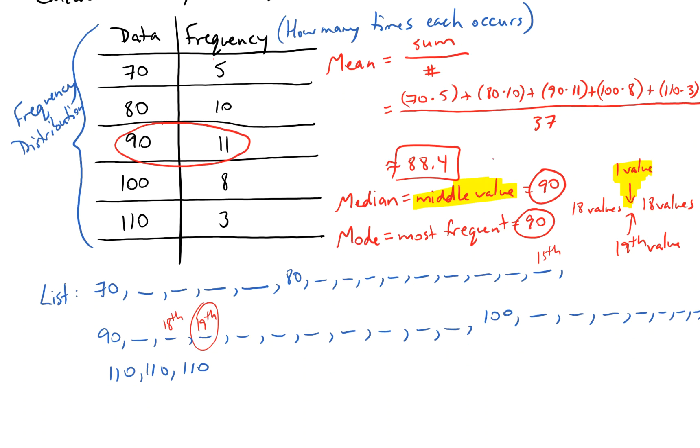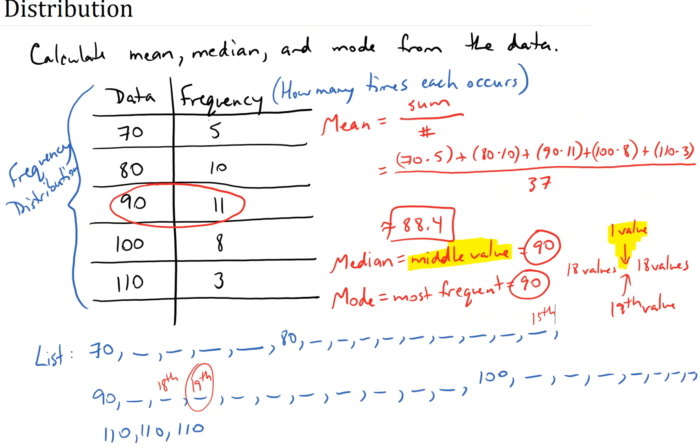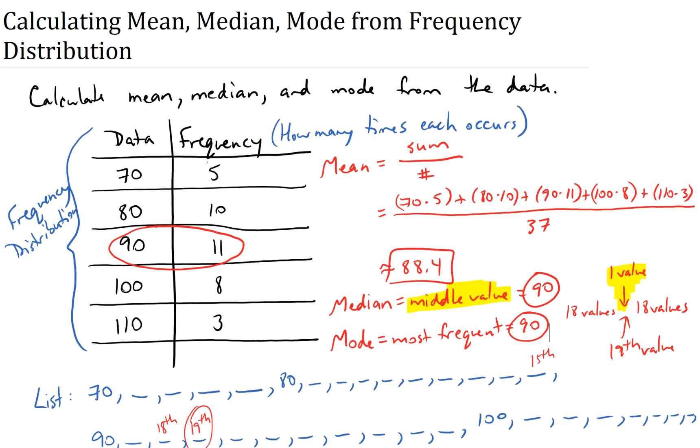So you can see the mean, the median, and the mode are all pretty close to one another. This is, I think, a good video to summarize frequency distributions, mean, median, and mode. I hope it makes sense.